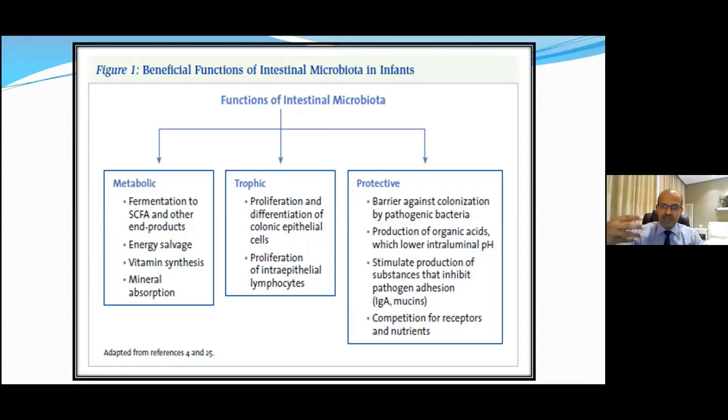The third aspect is a protective function. It affects colonization by pathogenic bacteria through different mechanisms — both a decoy mechanism, competition for receptors, and by changing the pH where pathogens are inhibited while beneficial bacteria thrive. It also stimulates the production of substances that inhibit pathogen adhesion, like IgA and mucins. There is also competition for receptors and nutrients.